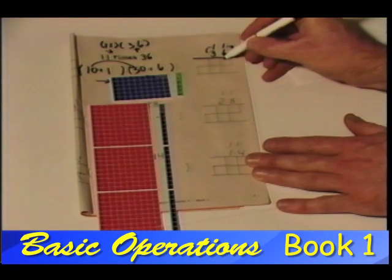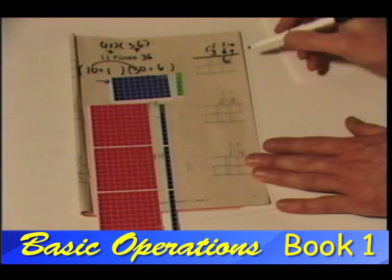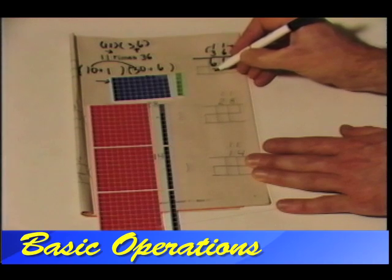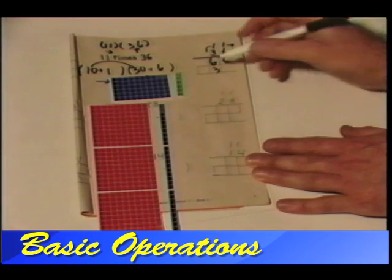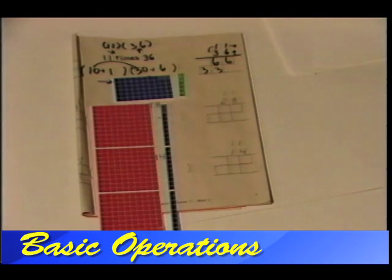6 units, 6 bars of 10, 3 bars of 10, 3 square hundreds.